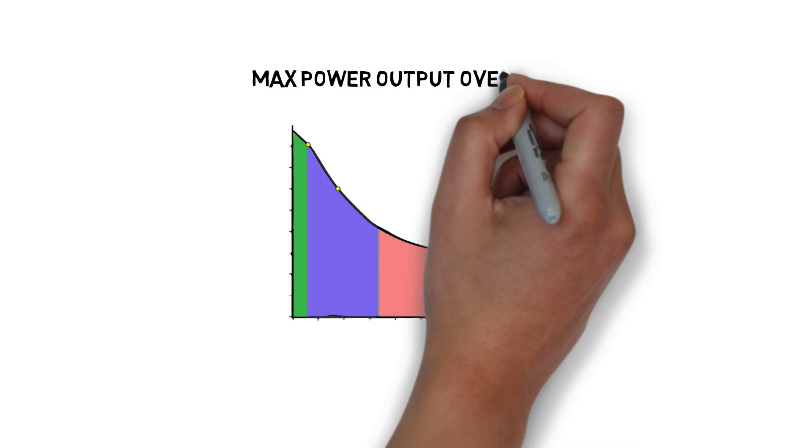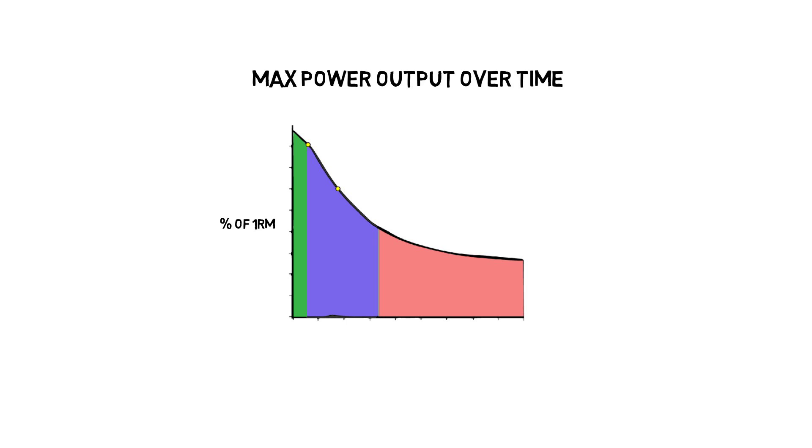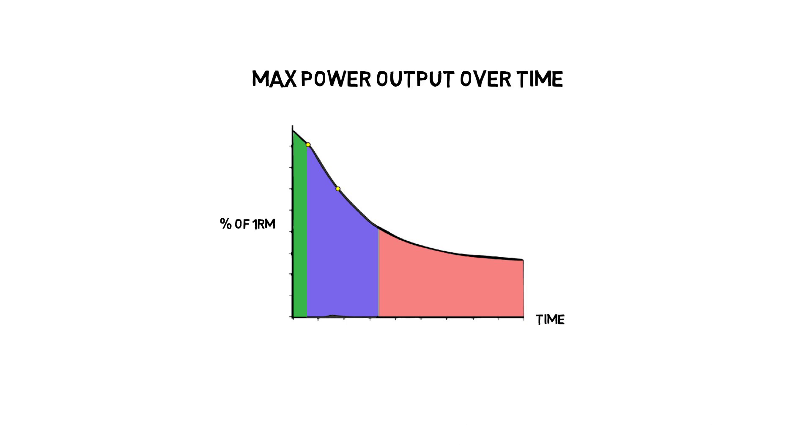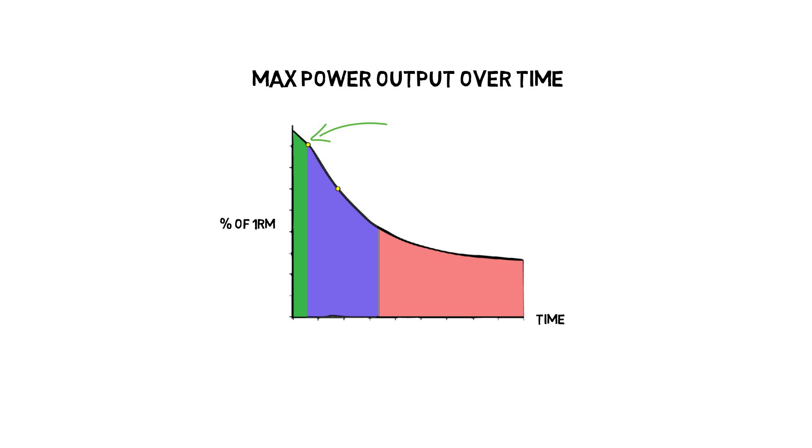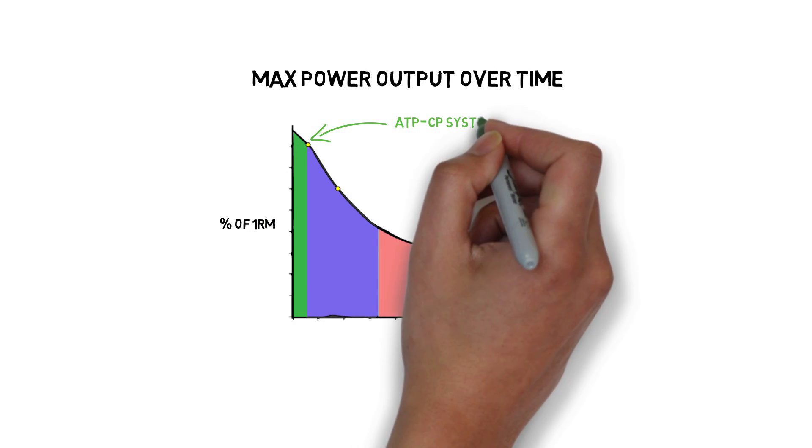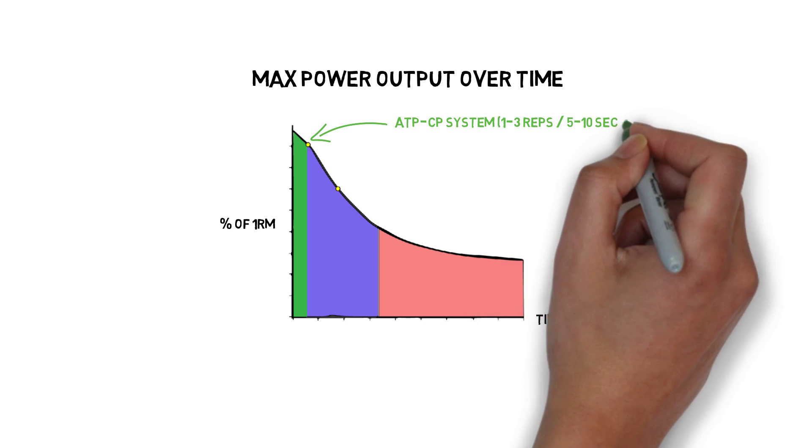The ATP-CP system is that initial rush of power, and is responsible for the majority of the energy used within the first few seconds of, say, a sprint, or depending how long you spend during a rep, generally the first one to three reps.